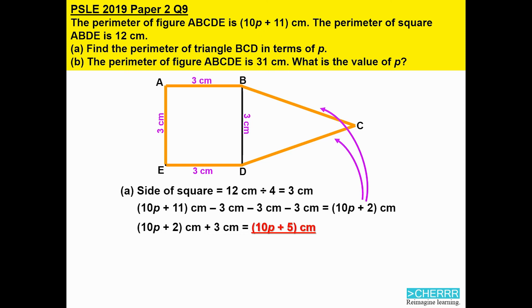In part b, we are told that the perimeter of the figure is 31 centimeters, so we formulate this equation: (10p + 11) centimeters equals 31 centimeters. That will get us 10p = 31 - 11, which is 20 centimeters. p is therefore 20 divided by 10 to get us 2.